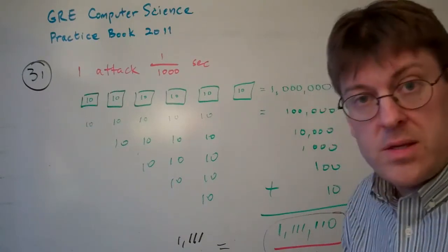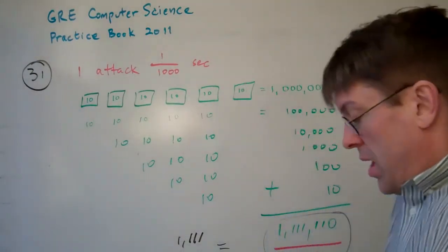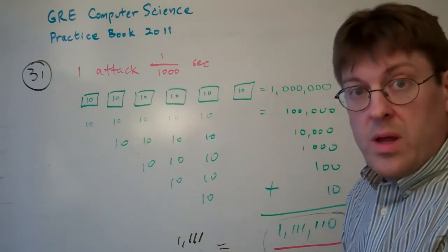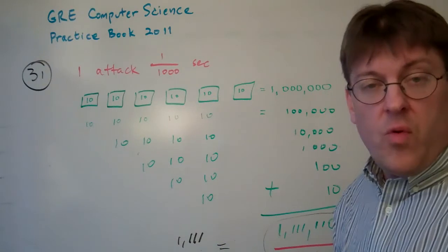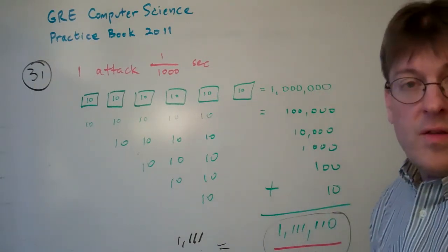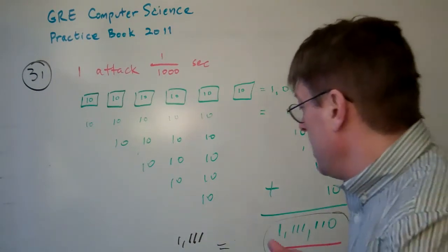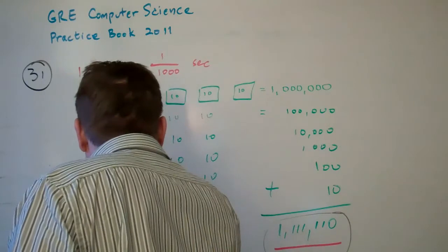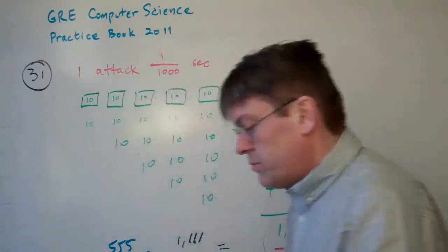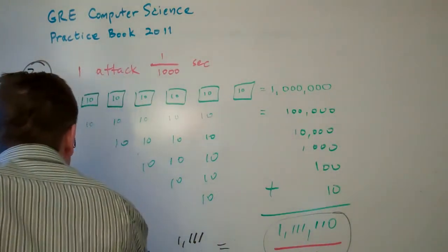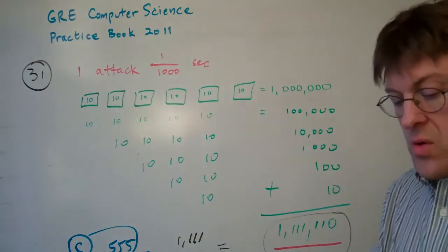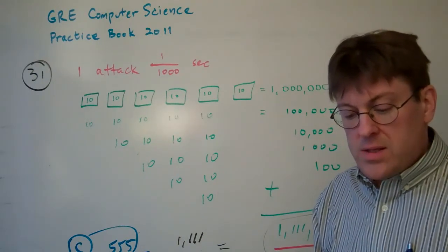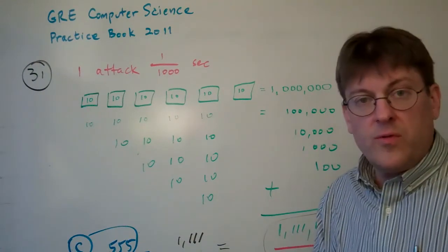But the question said the average case. In the average case, there's a 50% chance we're going to get it halfway through — before we get through half of them. We might guess it in the first quarter or third, and there's a 50% chance we might take more time. But basically, in the average case, you divide by 2. So the number is going to be around 555 seconds. The answer to question 31 is C — 555 seconds is the average-case expected time to perform the brute-force attack on this scheme.